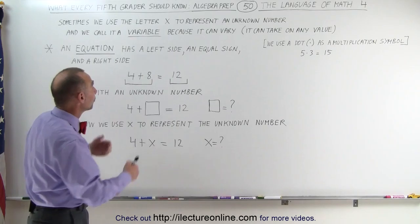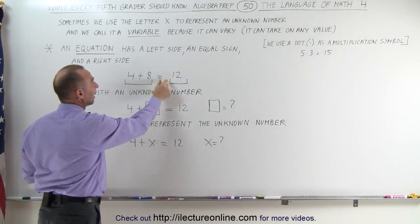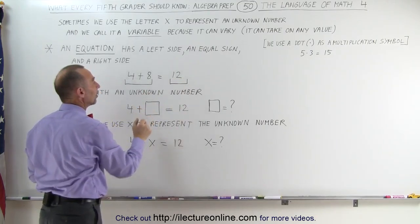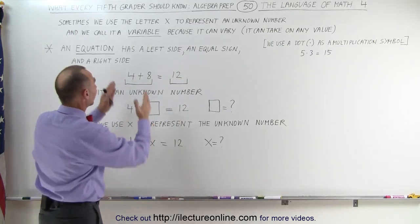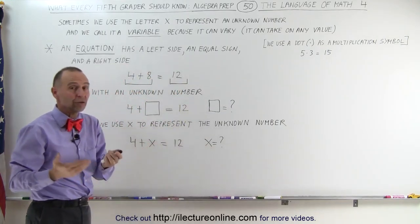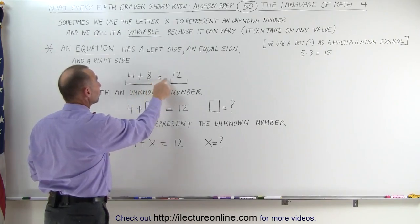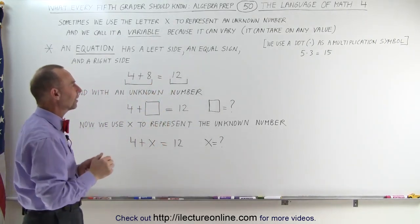Here's an example of what an equation looks like. Four plus eight, which is the left side. We have an equal sign, and then we have 12 as the right side. An equation means that the left side must equal the right side. And in this case, by mere inspection, we can see that four plus eight is 12, and 12 equals 12 seems to be correct. The left side equals the right side.